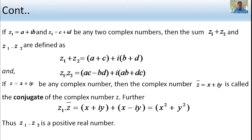The multiplication of z1 into z2 equals (ac minus bd) plus i(ab plus dc). For a complex number z equals x plus iy, the conjugate z-bar equals x minus iy is called the conjugate of the complex number z.